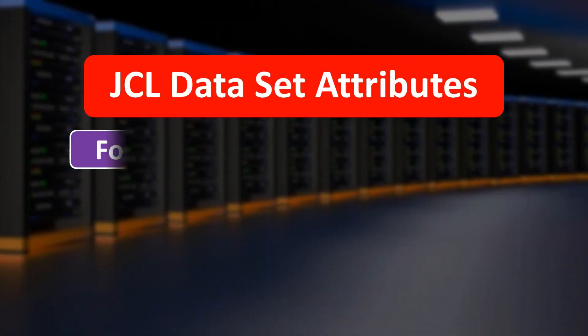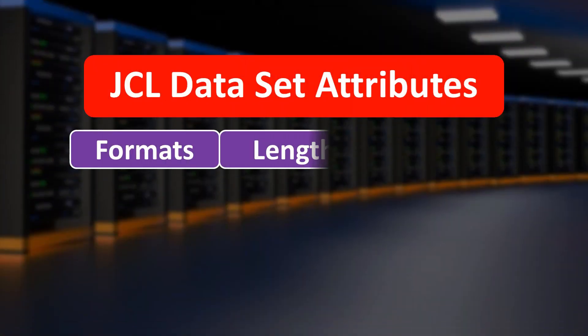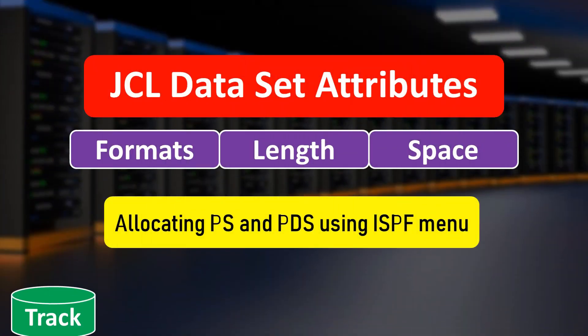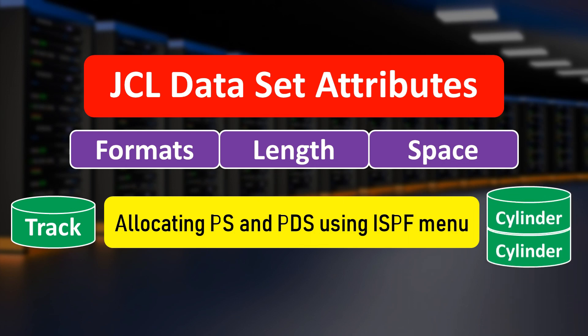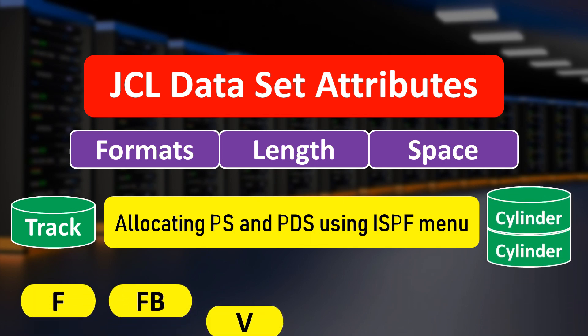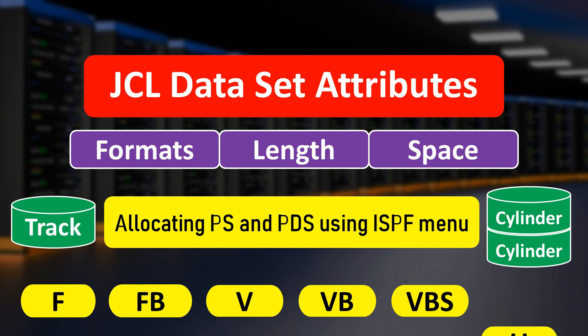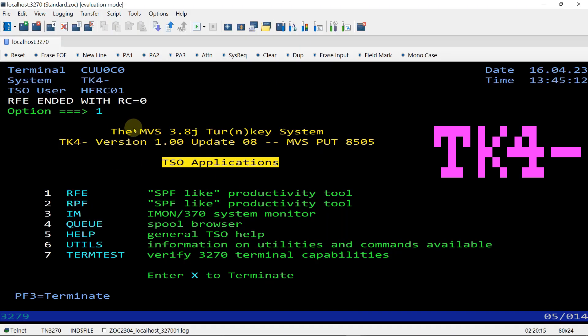Hello and welcome to another video on JCL. In this video I will explain all the basic things of JCL dataset attributes and their formats, and also I will show you how you can create PS and PDS files using the ISPF menu. Let's go to the mainframe screen — this is ZOC terminal and Hercules mainframe. I use z/OS for my client work but I can't make a tutorial on that, so I am using this.